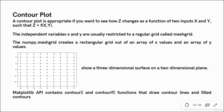So x and y are the independent variables, because we are trying to understand how z changes as a result of two inputs x and y. So x and y would be independent and z would be dependent. Now to draw a contour plot, we need to restrict the independent variables x and y in the form of a rectangular grid or a regular grid. This regular grid is known as a mesh grid — M-E-S-H-G-R-I-D.